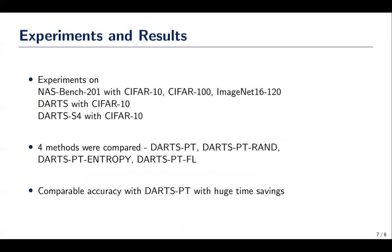Experiments were performed on three search spaces and different datasets. We compare our model against four different baselines: DARTS-PT without any subset selection, DARTS-PT with random subset selection, and DARTS-PT-FL subset selection using facility location method. We use the submodlib library for selection of subset using this method.